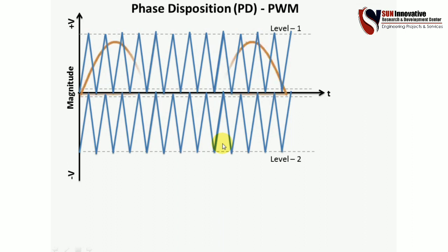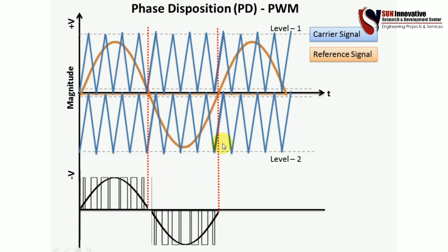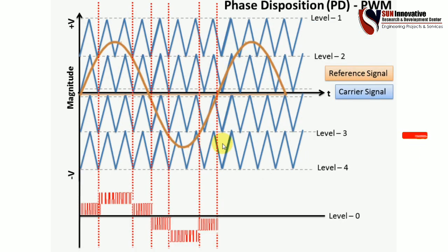By comparing the sinusoidal reference signal with the carrier signals, PWM pulses are generated according to the sinusoidal frequency, as shown at the bottom. For a 5-level inverter, 4 carrier signals are used (N minus 1 = 4). You can verify the output voltage levels: level 1, 2, 3, 4, and 5 are visible in the output.